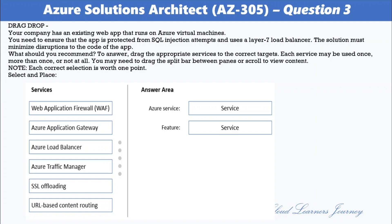For the Azure service, the answer is Azure Application Gateway, and the feature is Web Application Firewall. Azure Application Gateway with Web Application Firewall provides protection for web applications, with protections provided by the Open Web Application Security Project (OWASP) rules.